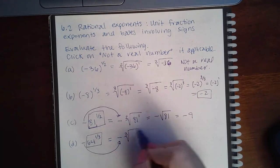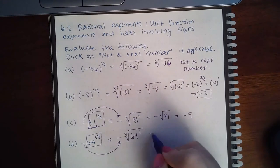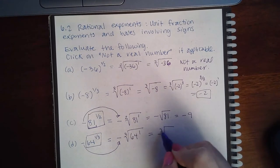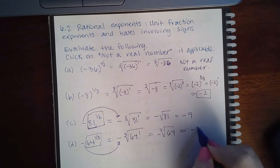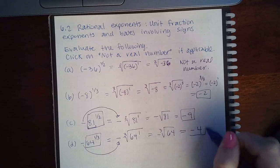Index is 3, power is 1. So negative third root of 64, which is negative 4. And so here are all my answers.